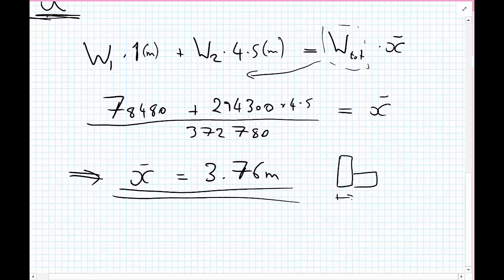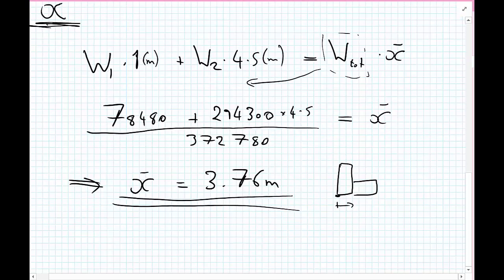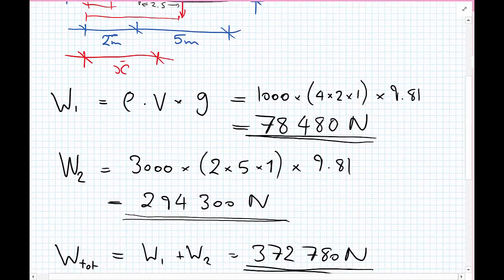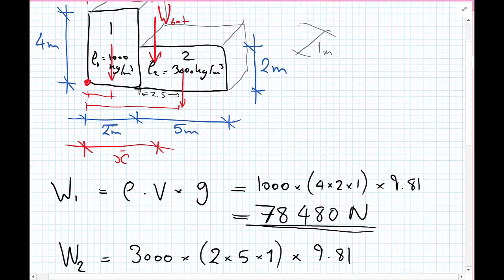Let's do a quick sanity check. We scroll across 3.76 meters: box one is two meters wide, and box two extends to 4.5 meters total. So 3.76 meters falls somewhere around here, actually a little bit closer to the center of box two, which makes sense because box two is significantly heavier.